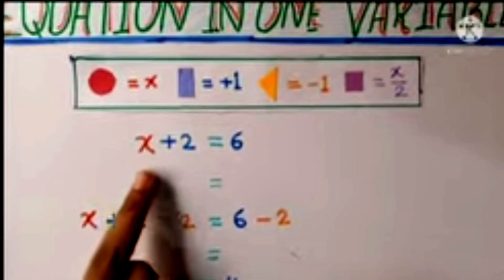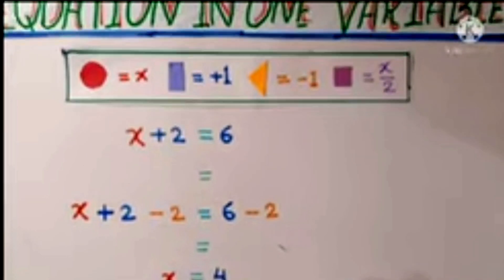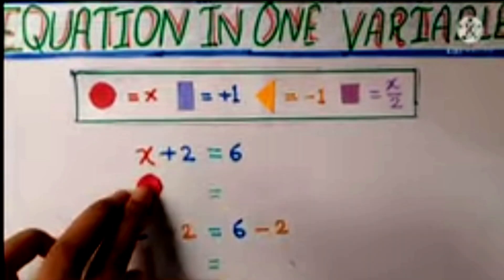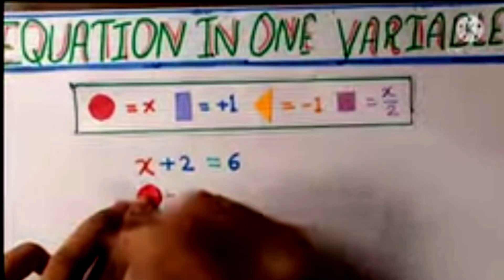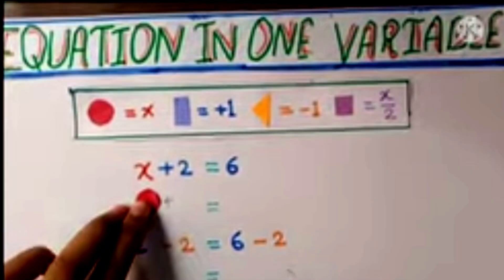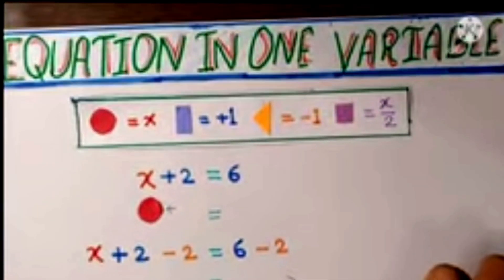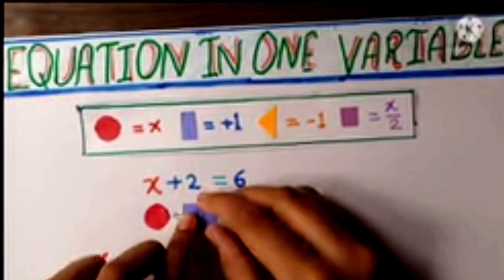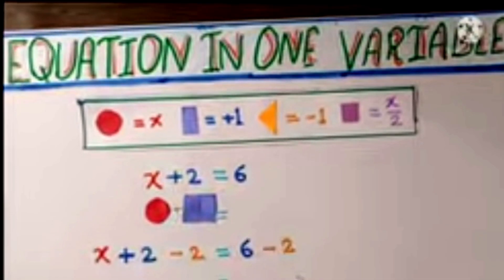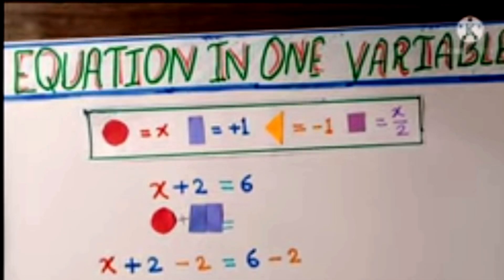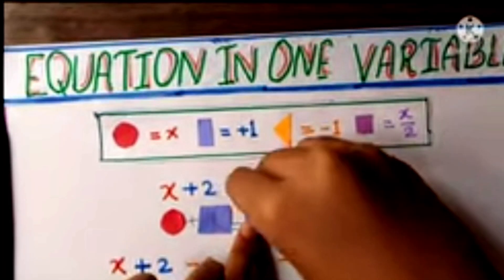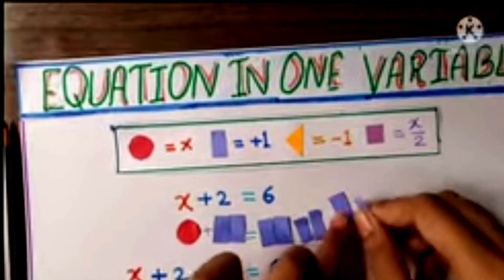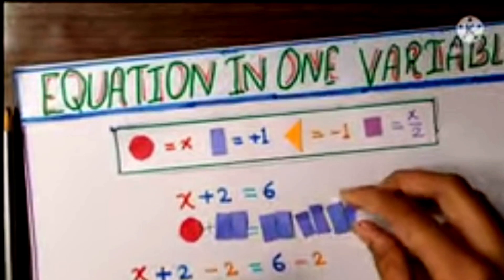Here is our first equation: x plus 2 is equal to 6. So let's take our x — this circle is our x — plus 2. Here let's take two symbols of plus, so our two symbols of plus equals 6. Here let's put the 6, so here are our 6 symbols.